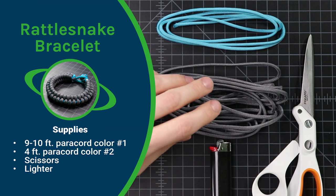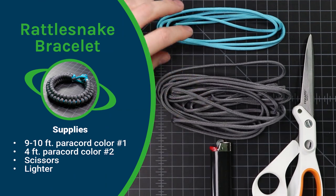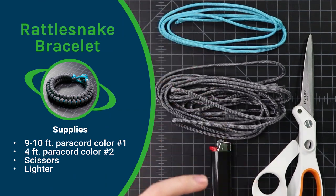So what you'll need for this project is 9 to 10 feet of paracord in one color and 4 feet of another color. You'll also need a scissors and a lighter, let's dive right in.